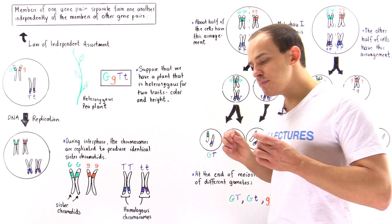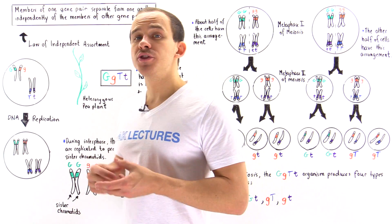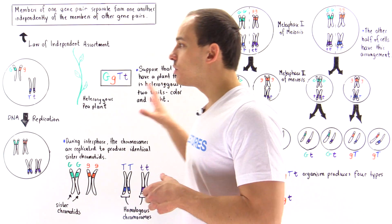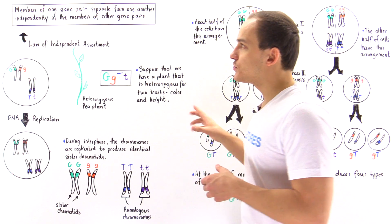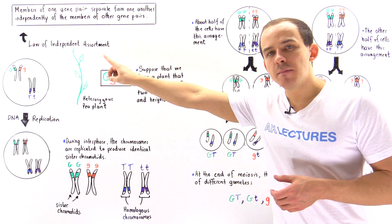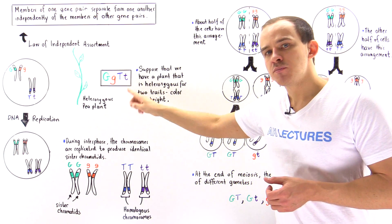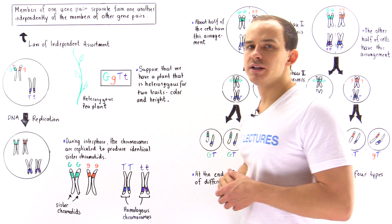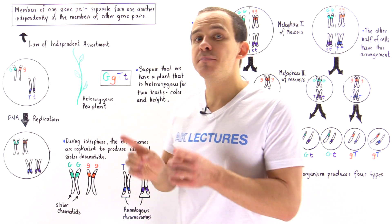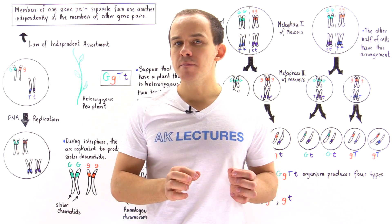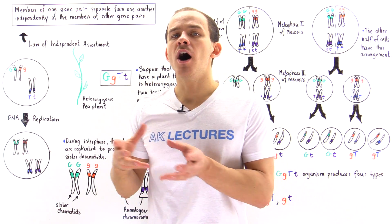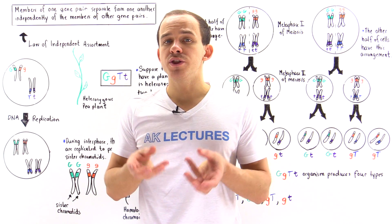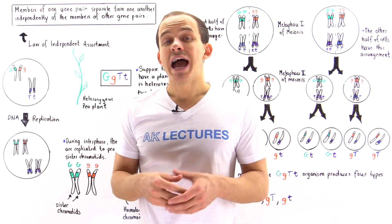Let's begin by stating what the law tells us. The law states that members of one gene pair will separate from one another independently of the members of other gene pairs found within that same organism.